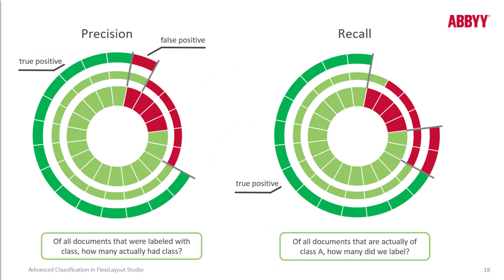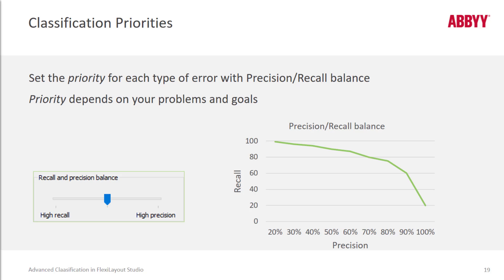This illustration is for easier comparison of the meaning of recall and precision. We count precision from all the documents that received class A — of all documents that were labeled with class A, how many actually were assigned that class? And we count recall from all the documents that had to receive class A — of all documents that were actually of class A, how many did we label? Precision and recall are always set in a balance; one affects the other. The higher the precision is specified, the lower the recall number is.